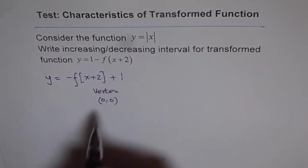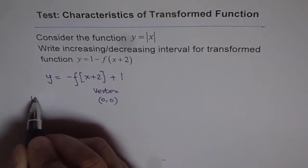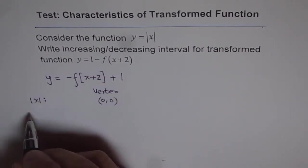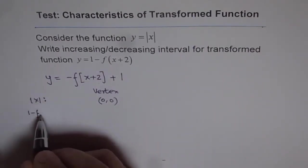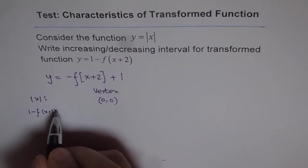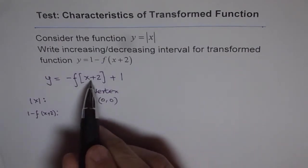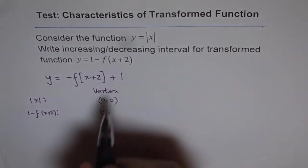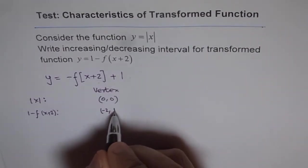Now what happens to this vertex? So we are talking about, let's call this line for absolute x. And then we will consider what happens to a transform function which is 1 minus f of, so I am writing this at present, I should have written that, x plus 2. Now in this particular function, what happens to the vertex? The x point changes to minus 2. And the y point multiply by minus 1, add 1. So y point becomes this.